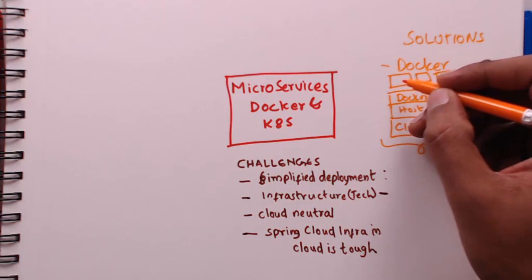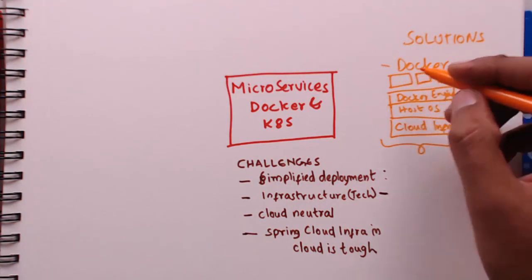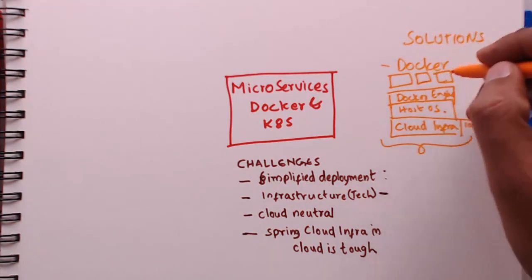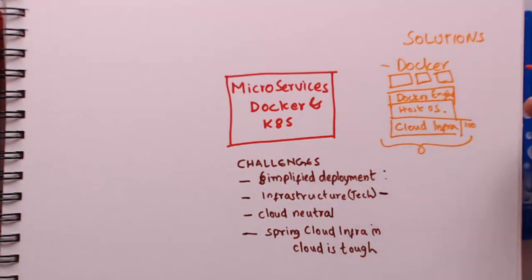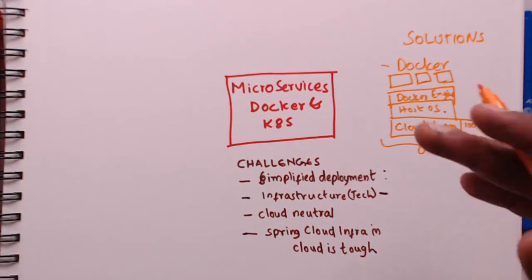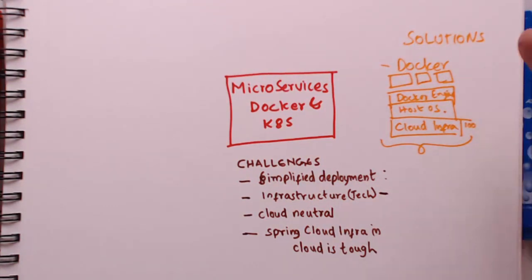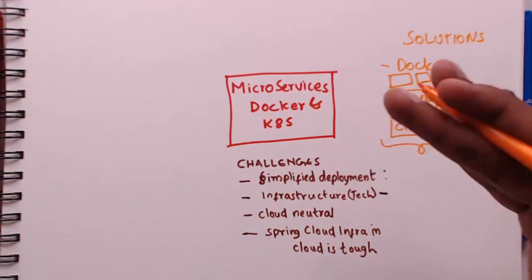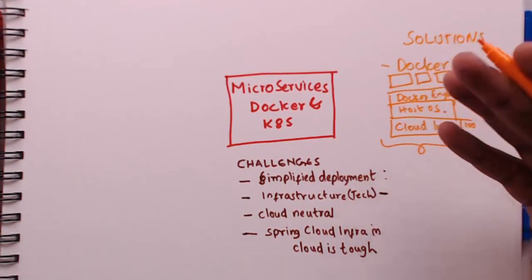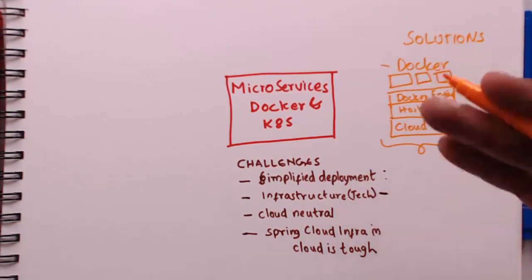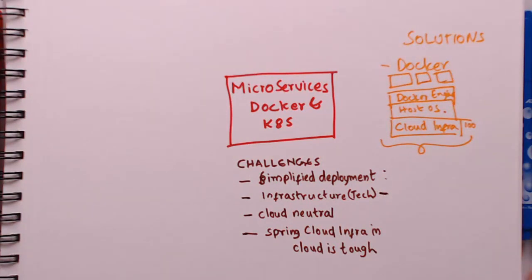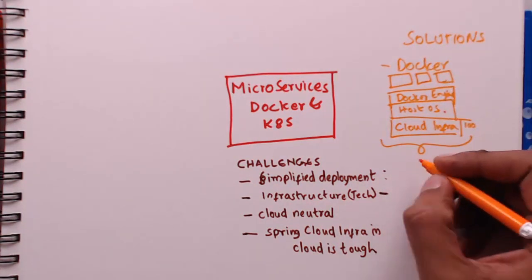Docker is cloud neutral packaging — it can work in AWS, Azure, Google Cloud, wherever you'd want. And it's also language neutral because you can create a Docker image for almost anything in this technology world.